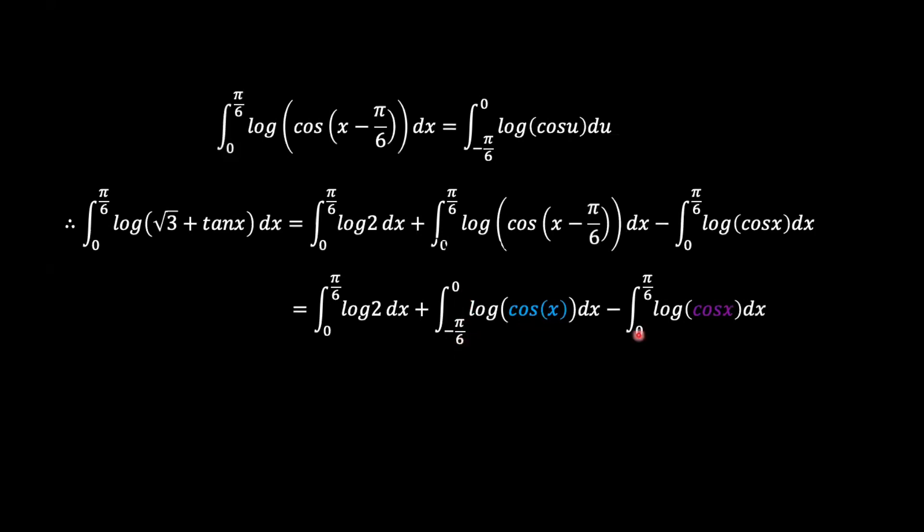And if we look at the plot of cosine x, from negative pi over 6 to 0 is a reflection of the same plot of cosine x from 0 to pi over 6. So what this really means is that if I integrated the log of cosine x in this negative pi over 6 to 0 domain, I would get the same answer as when I integrated from 0 to pi over 6, the same function.